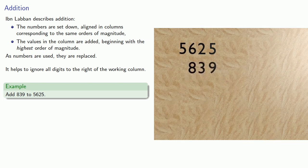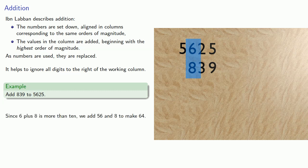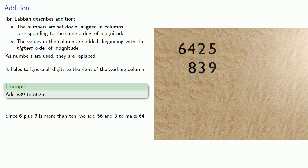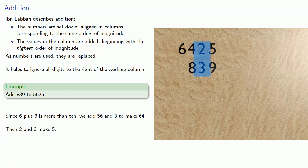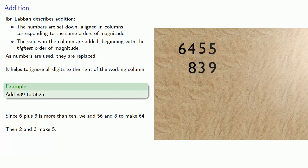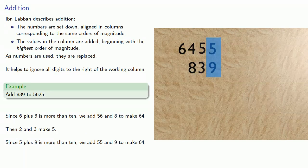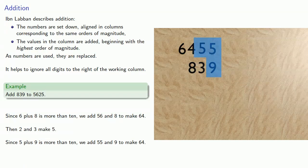So we start on the left. And since 6 plus 8 is more than 10, we actually add 56 and 8 to make 64. Then 2 and 3 make 5. And again, since 5 plus 9 is more than 10, we'll actually add 55 and 9 to make 64.